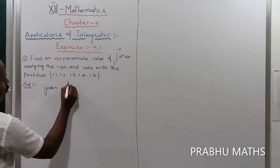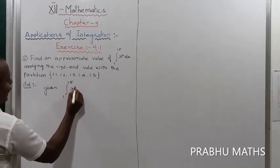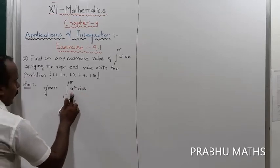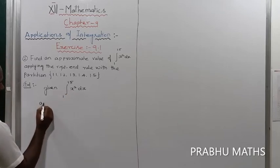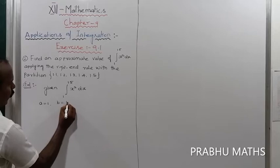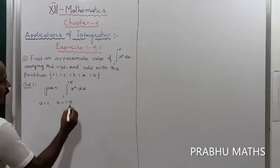Given that the integration is integral of 1 to 1.5 x square dx, a equals 1, that is the lower limit. Next, b equals 1.5, that is the upper limit.